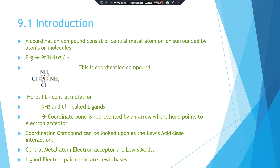Coordination compounds having a metal ion at the center are common. In this example, two ammonia molecules and two chloride ligands utilize their lone pairs of electrons to form bonds with platinum. The donor nitrogen and chlorine atoms of the ligands are directly attached to platinum. Formation of a coordinate bond can be viewed as a Lewis acid-base interaction: ligands, being electron pair donors, are Lewis bases, and the central metal ion, being an electron pair acceptor, serves as the Lewis acid.